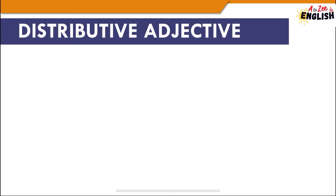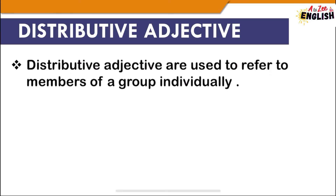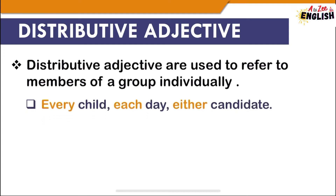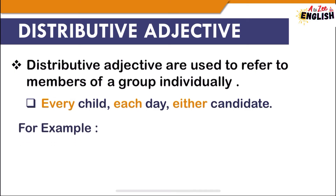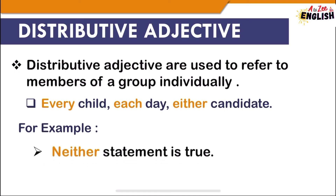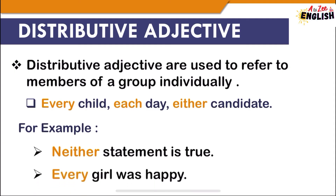Another type is distributive adjective. Distributive adjectives are used to refer to members of a group individually — such as every child, each day, either candidate. For example, 'Neither statement is true' and 'Every girl was happy.' Distributive adjectives answer the question 'which one' of a number.